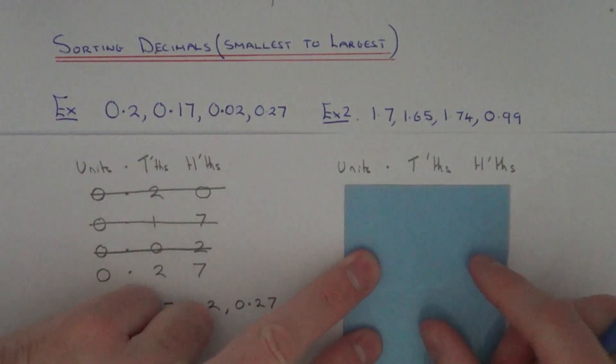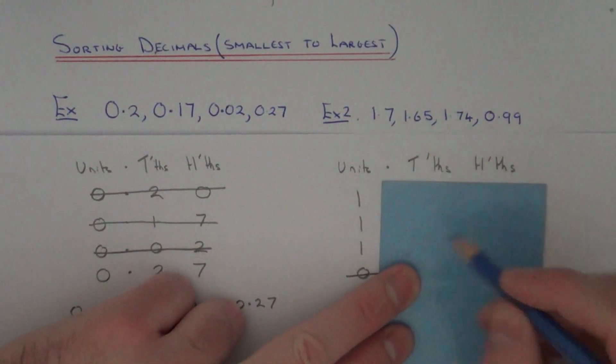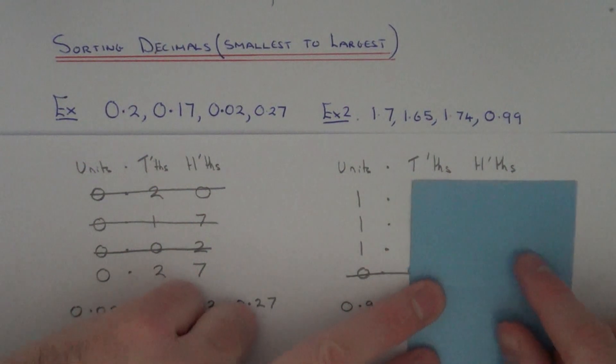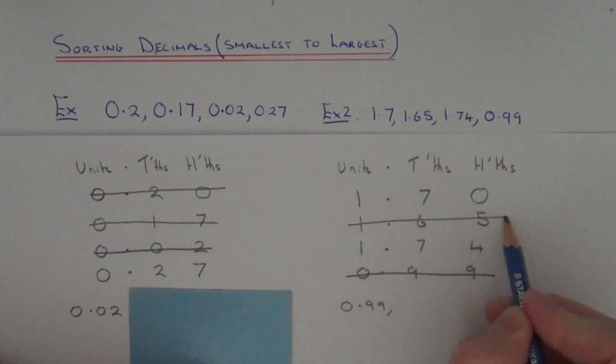So if you repeat the process again, move it from left to right. We've got 1s in the first column, so we can't decide which one is the smallest here. So move it to the tenths column. In our tenths column we have a 6 here, so this will make 1.65 the next biggest decimal.